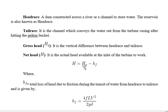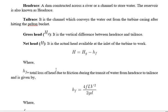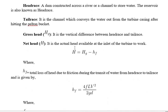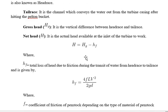The gross head is the pressure head due to the difference between head race and tail race. Because of this available head we have pressure energy, which is then converted into kinetic energy. However, some of this head is lost due to friction, and accounting for this friction loss gives us the net head. The net head is the head available at the inlet of the turbine.